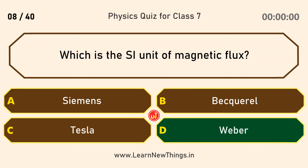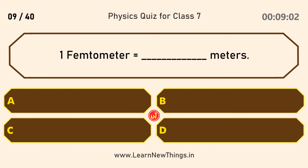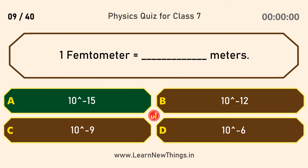1 femtometer is equal to how many meters? 10 to the power of minus 15 meters.